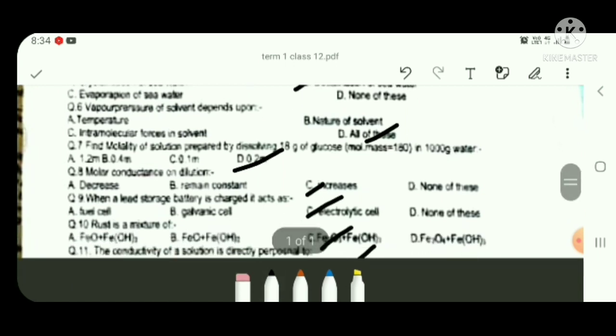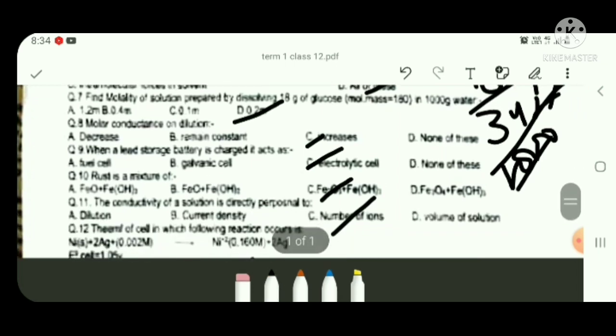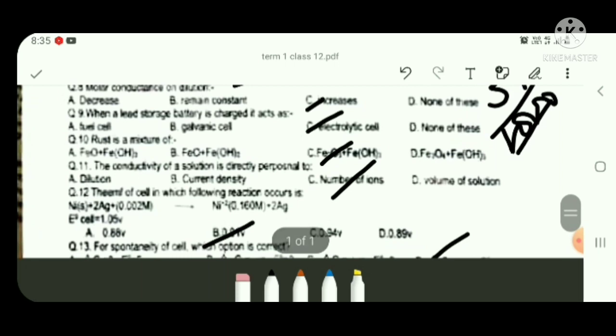Find molarity: 18 gram of glucose, 18 divided by 342 number of moles, twice C option.